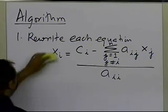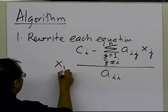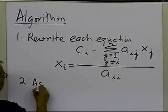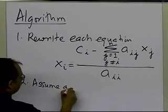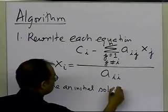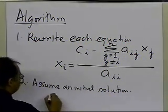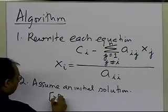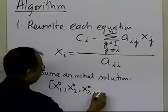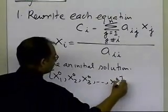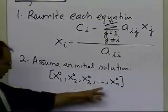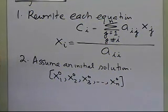So this is what x_i is — you're going to rewrite the equations like this. Now what you're going to do is assume an initial solution. So let's suppose we call it x1⁰, x2⁰, x3⁰, all the way up to xn⁰. The superscript 0 stands for the initial guess, and the subscripts are the n unknowns in the x array.